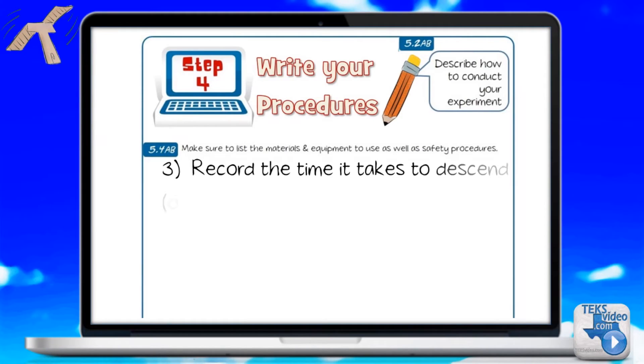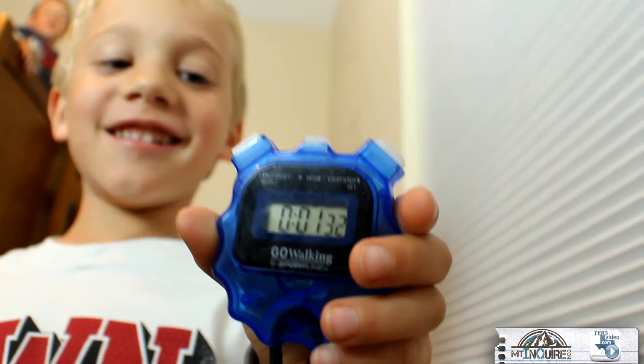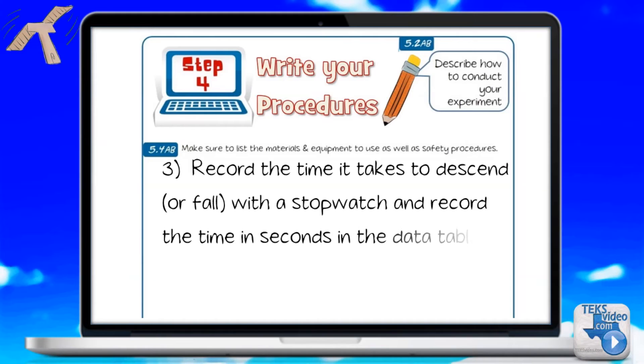Step 3: Record the time it takes to descend or fall with a stopwatch and record the time in seconds in the data table. Step 4: Repeat for 3 trials for each wing length.